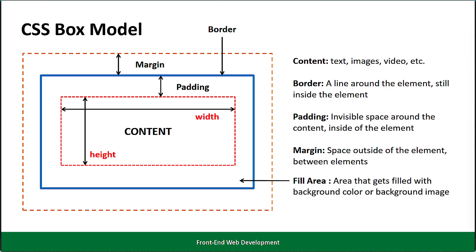Next is the padding. The padding surrounds the content and sits within the border. This invisible space provides a buffer between the content and the border, ensuring that your text or media isn't cramped against the edges. Padding can be adjusted using CSS properties such as padding-top, padding-right, padding-bottom, and padding-left. Proper use of padding enhances readability and the overall user experience by giving your content room to breathe.